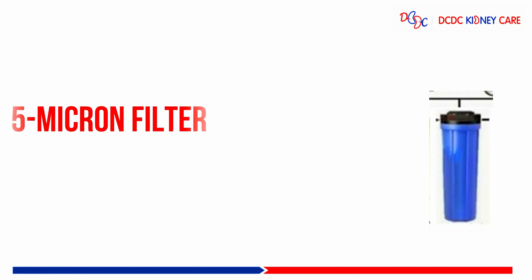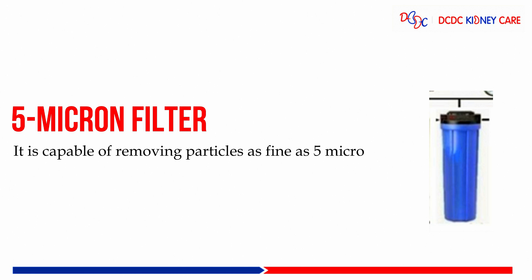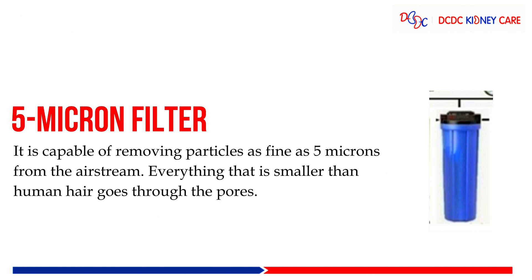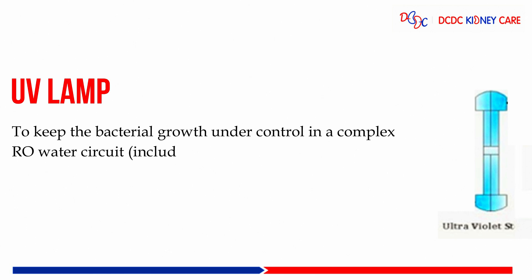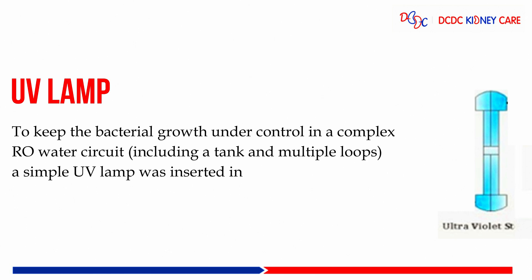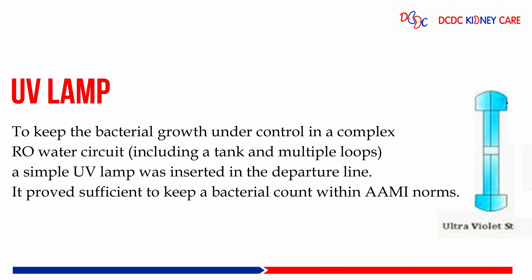Then a 5 micron filter, capable of removing particles as fine as 5 microns. Then UV light and UV lamp, used to keep bacterial growth under control in a complex RO water circuit including the tank and multiple loops. A UV lamp is inserted in the departure line.